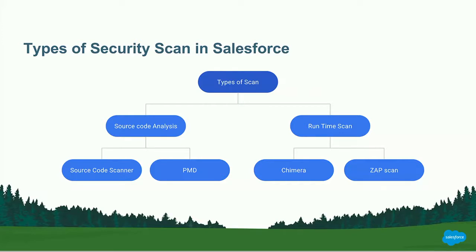There are two types of scans. One is source code and the other is runtime scan. In source code analysis, it blindly looks at your code — it doesn't run the code at runtime. Runtime analysis runs the entire code and then identifies the security issues that happen during runtime. For source code analysis, I'll be talking about the Source Code Scanner, which is a cloud-based scanner we built in-house and runs Chimera in the background. PMD is an open source solution. Vinay will be talking about runtime scanners.